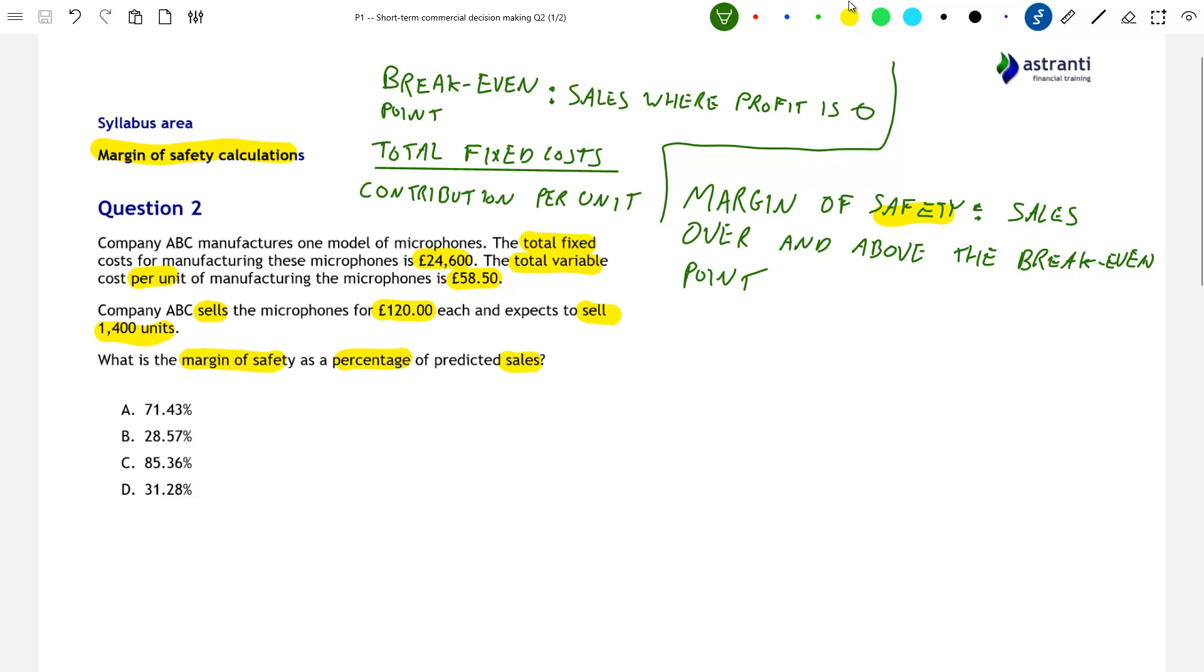So this gives us two steps to follow in answering this question. Step one is to find the break-even point and then step two is to, based on this, identify the company's margin of safety. So with these concepts in mind, let's now take a look at the figures given to us in our question.